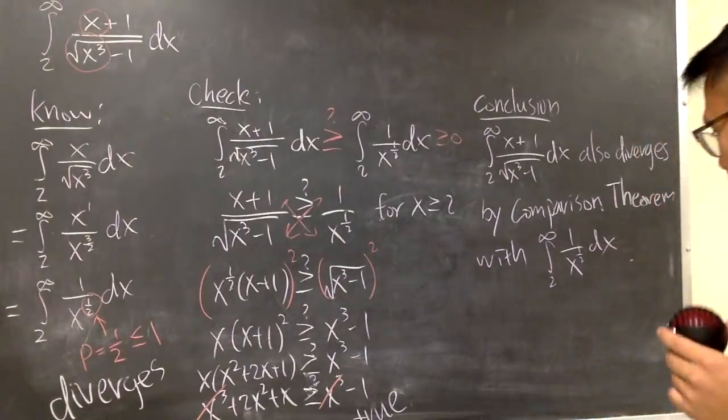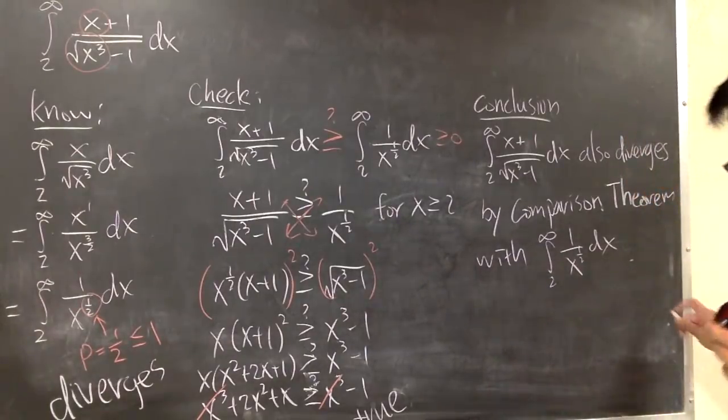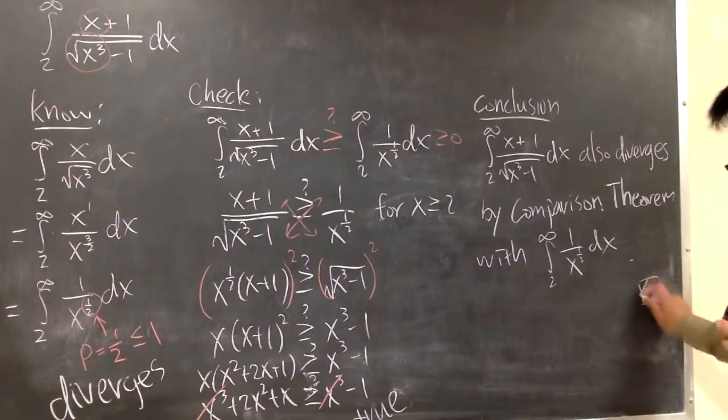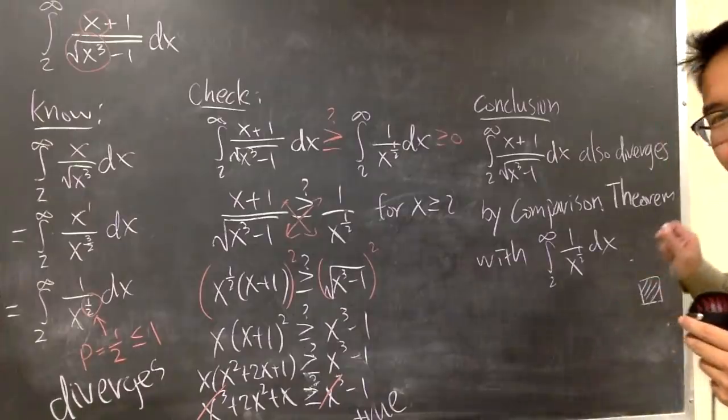This is how you do the proof for improper integrals with the comparison theorem. In the end, if you want to be fancy, you can draw a box and shade this in. This is how the math people do it. That's it.